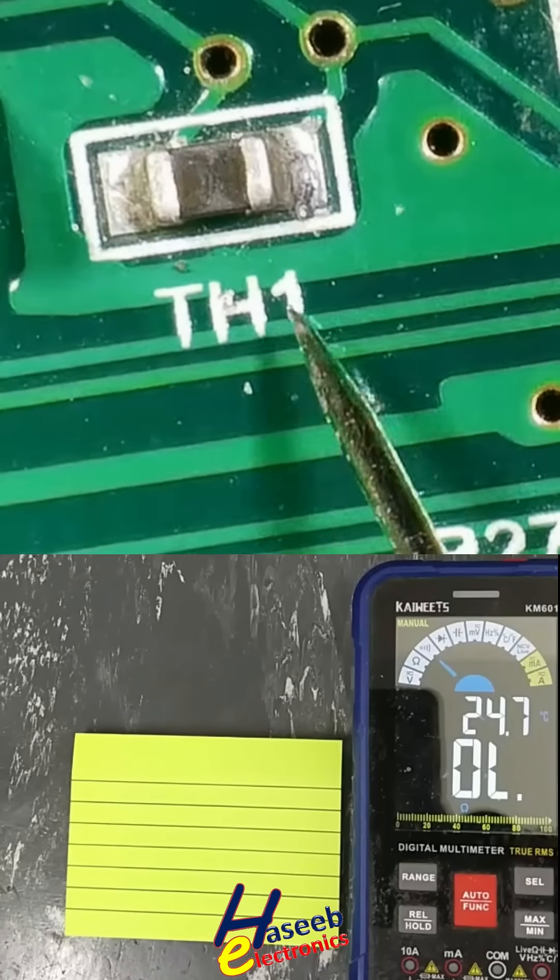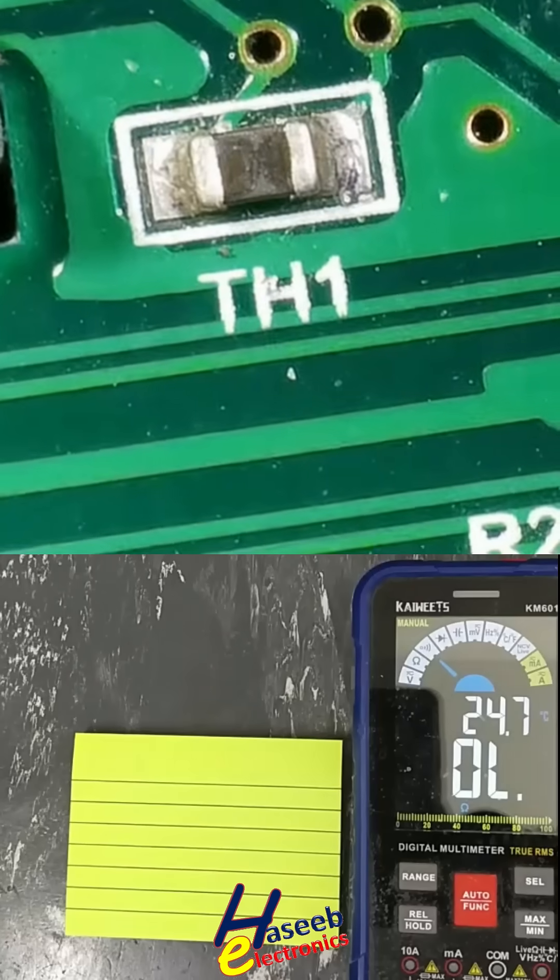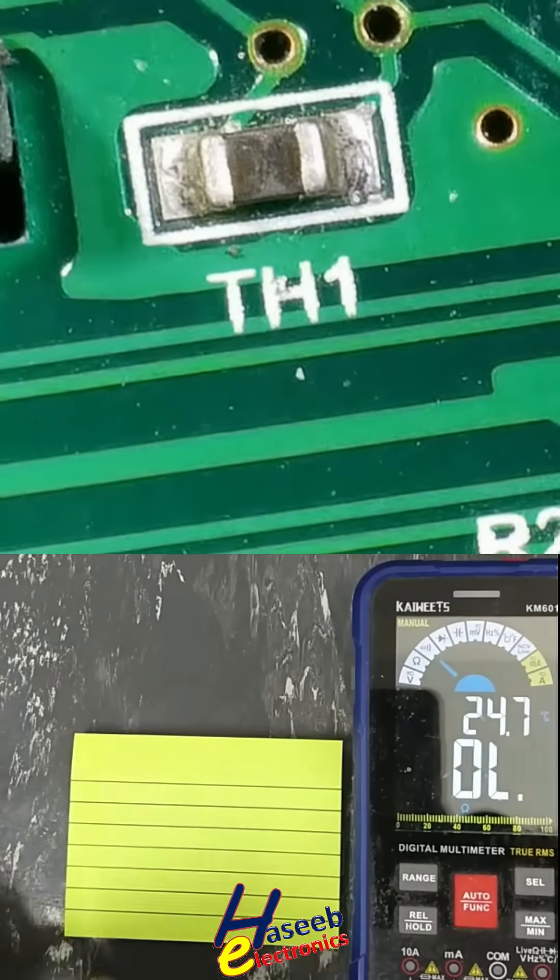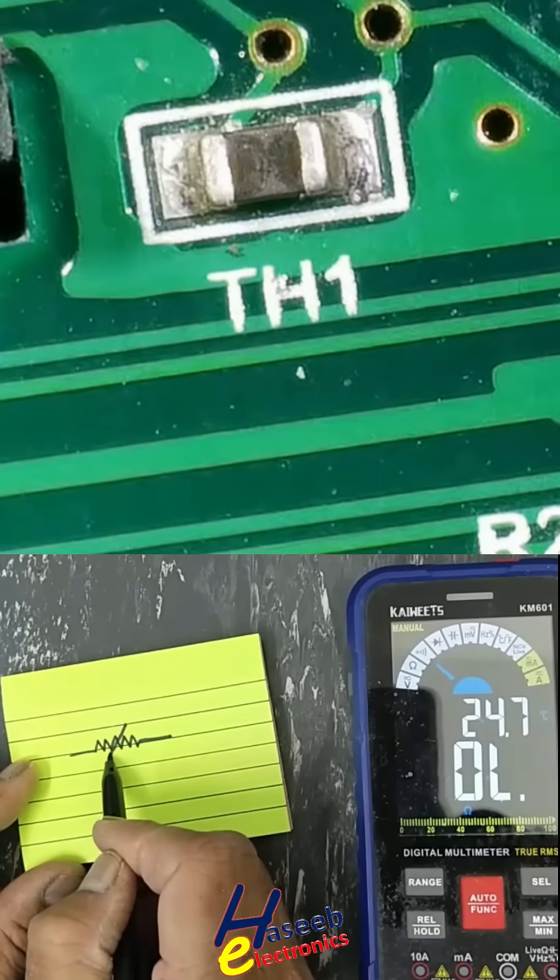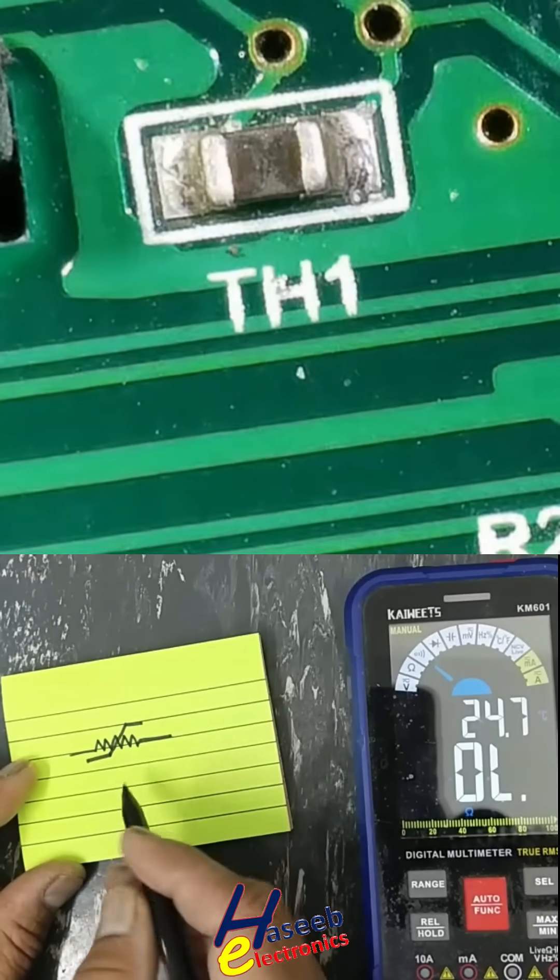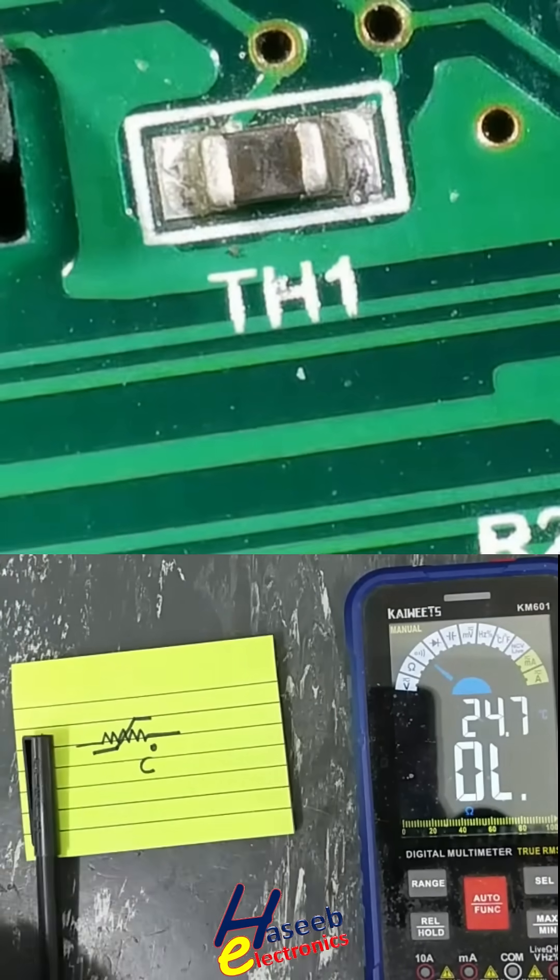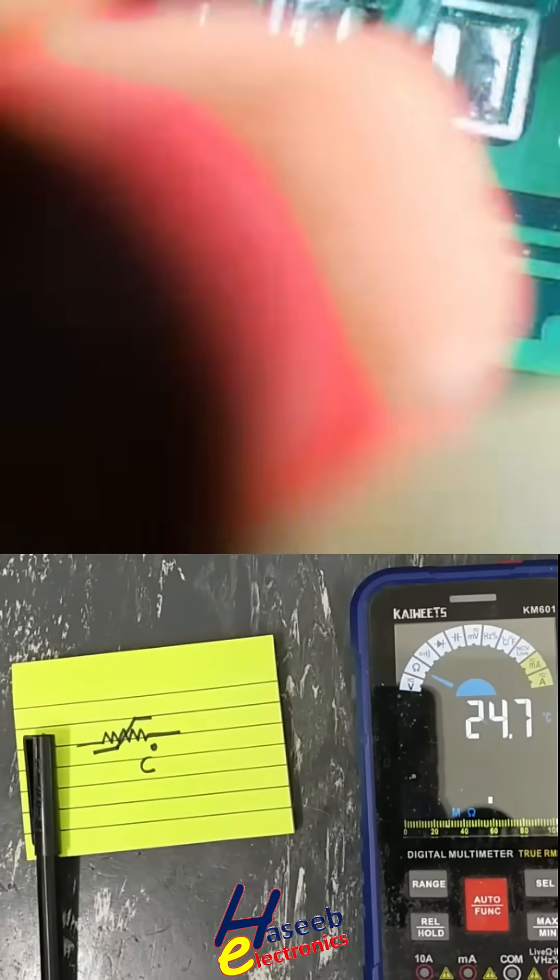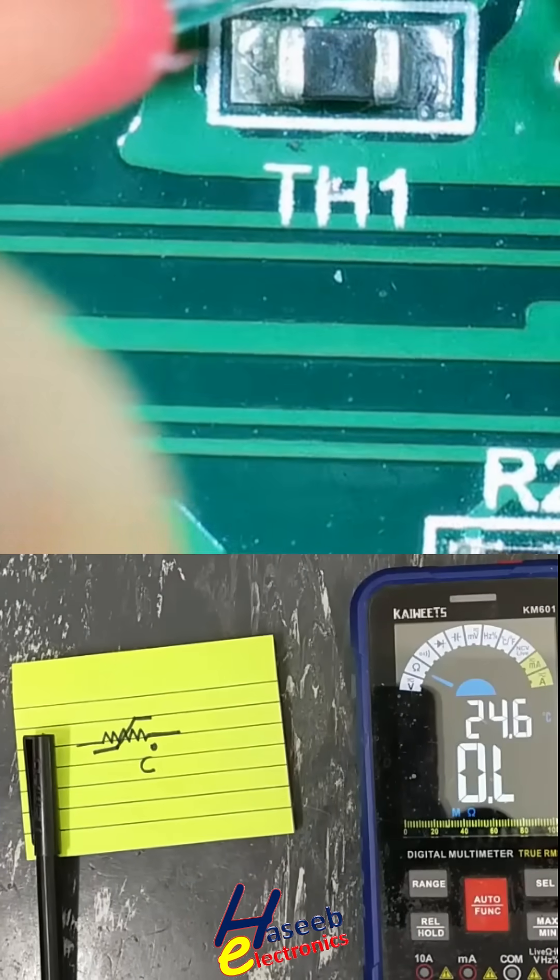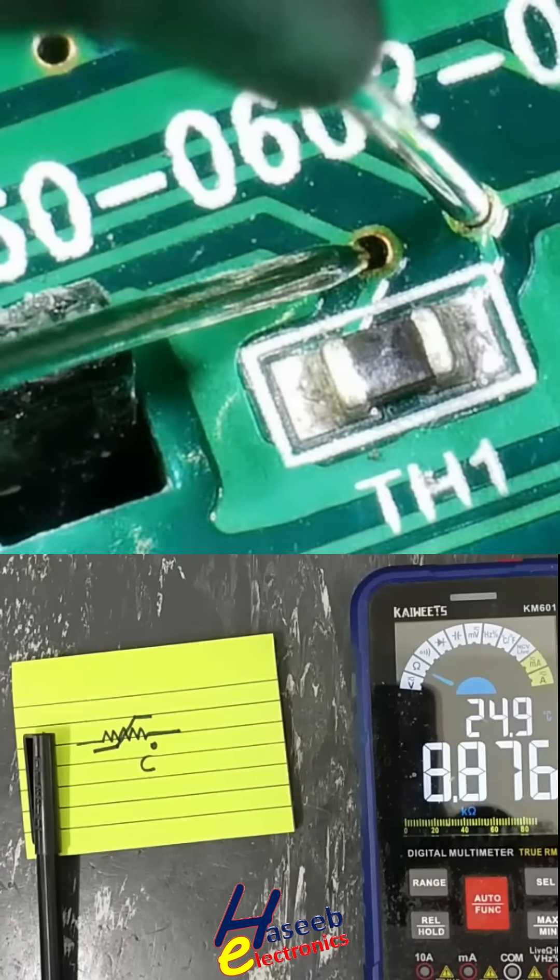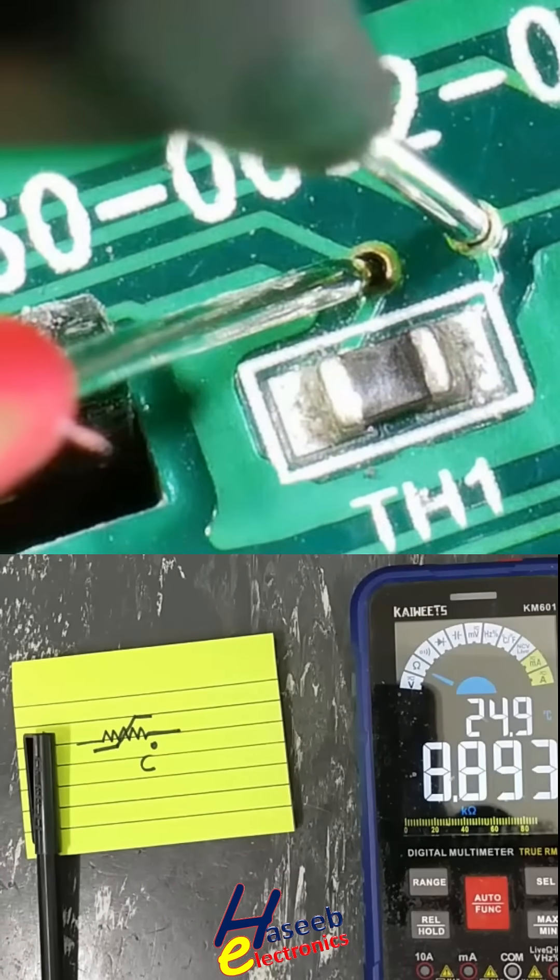TH1, TH marking for thermistor. Either it is NTC or PTC, its resistance will change with change in temperature. We will check either it is NTC or PTC. Resistance is temperature dependent. It is showing 8.87 ohms depending on the room temperature.